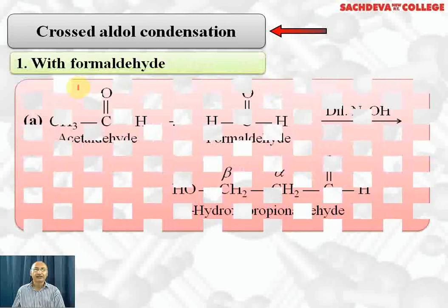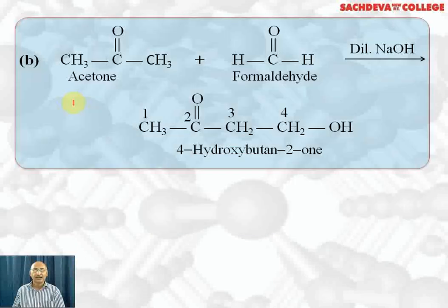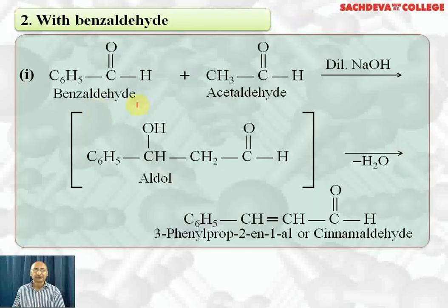Another example: acetaldehyde condensed with formaldehyde — formaldehyde does not have alpha hydrogen, so the carbanion generated from acetaldehyde attacks the carbonyl carbon of formaldehyde, resulting in beta-hydroxypropionaldehyde. Dehydration of OH and H gives acrolein. Acetone reacts with formaldehyde in the presence of dilute NaOH; the carbanion from acetone results in 4-hydroxybutan-2-one. This can also undergo dehydration to give an unsaturated ketone.